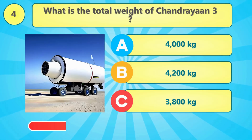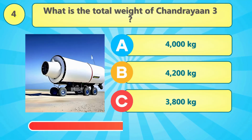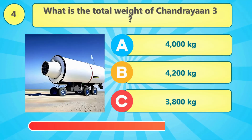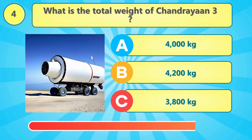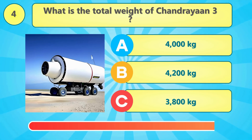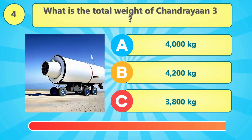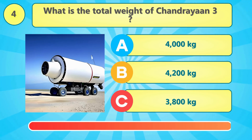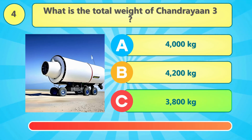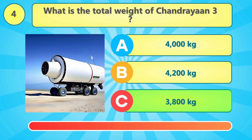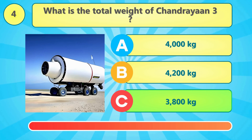What is the total weight of Chandrayaan 3? The answer is 3,800 kilograms.